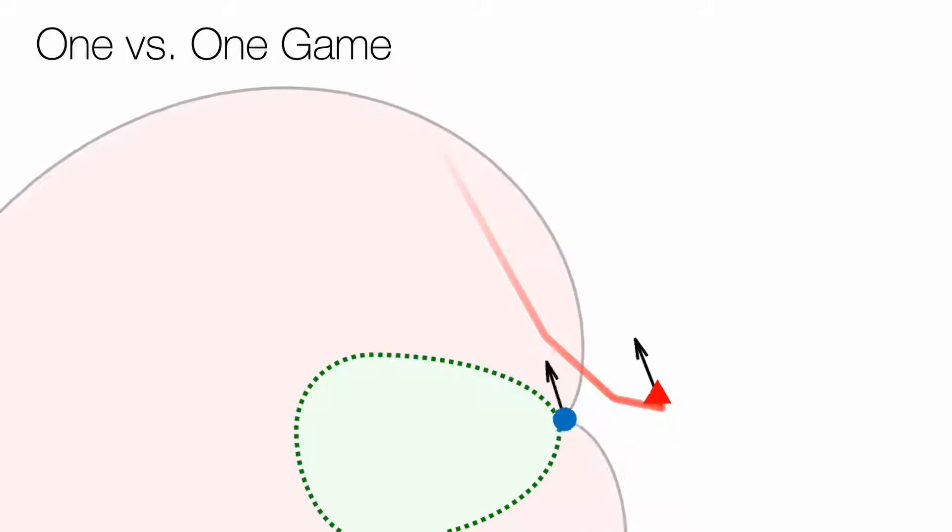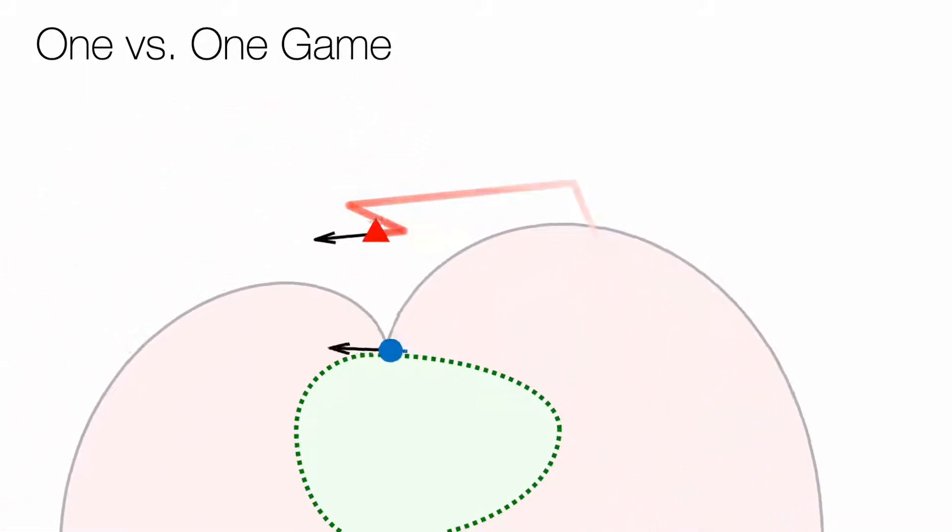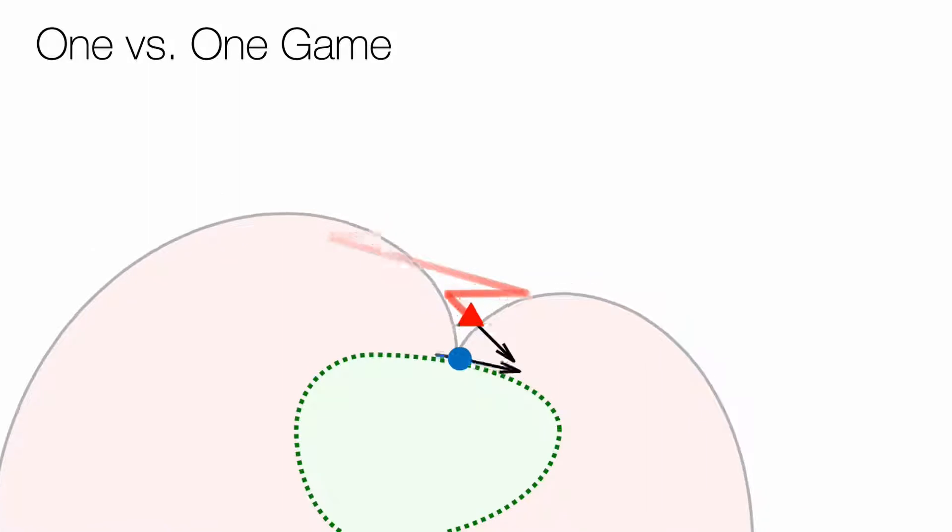However, if it starts outside, then the defender can make sure that the intruder cannot reach the perimeter without being captured.